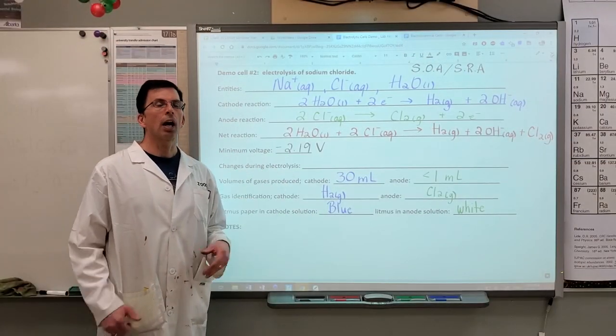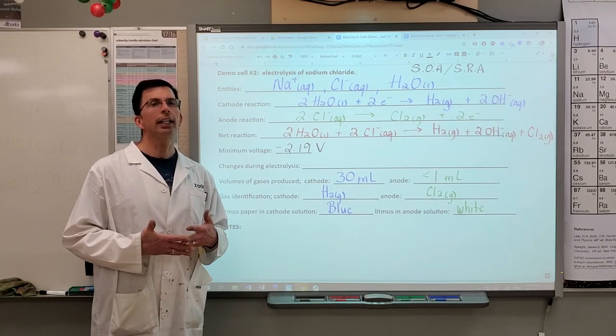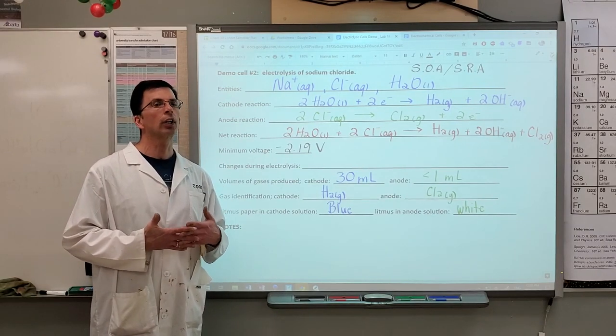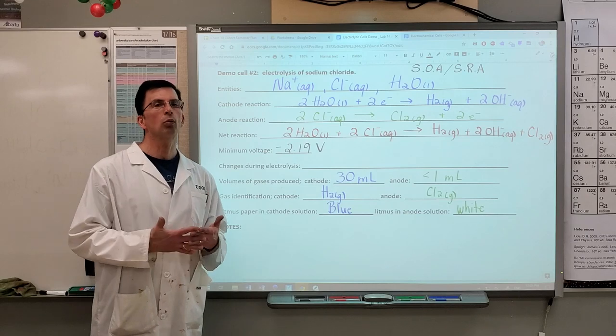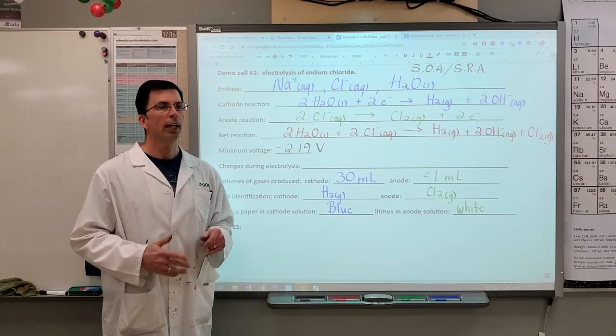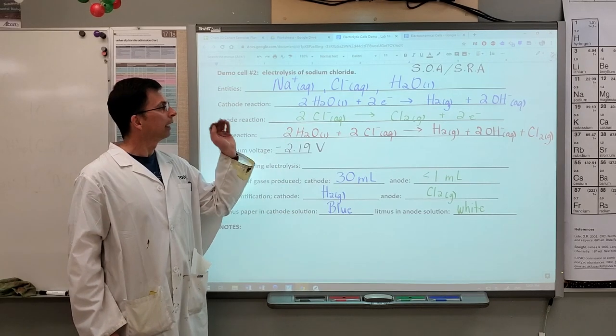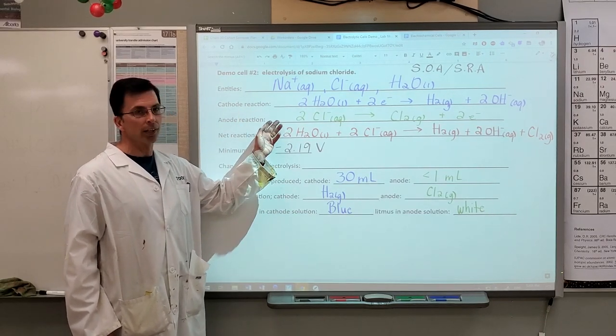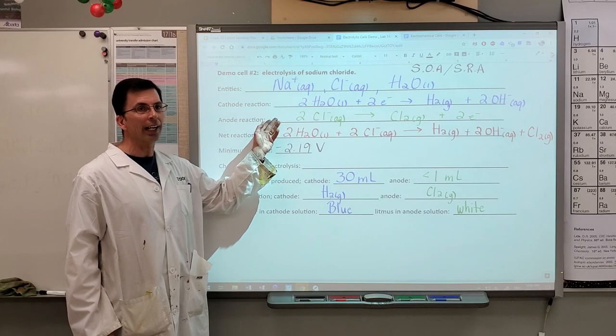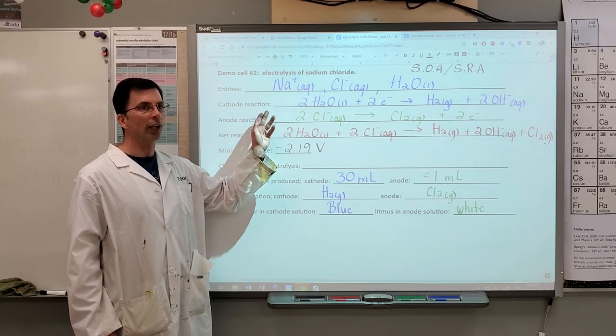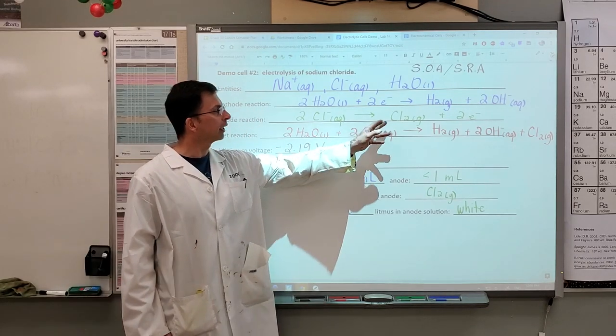So to summarize, we have what's called an anomaly here. And this is specifically called the chloride anomaly. It's the only one in our Chem 30 course. And what that means is that the anode reaction has been changed. It is not the oxidation of water that occurs, but actually the oxidation of chloride ion forming chlorine gas.